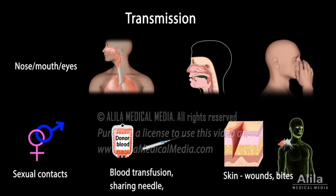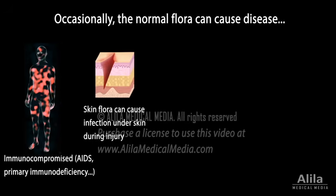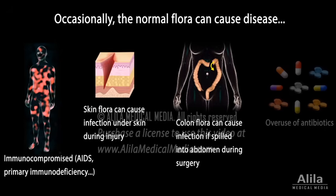The normal flora is usually harmless, but can cause disease in people with a weakened immune system. Resident bacteria may also cause infection if they enter parts of the body that are supposed to be free of germs, which can happen during an injury or surgery. Overuse of antibiotics may kill protective bacteria, allowing opportunistic pathogens to thrive and cause disease.